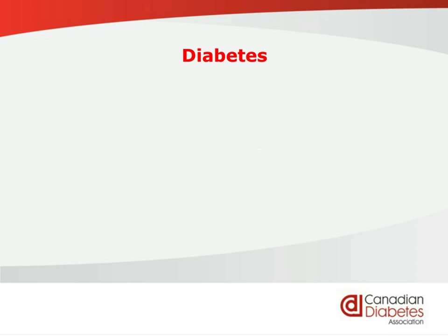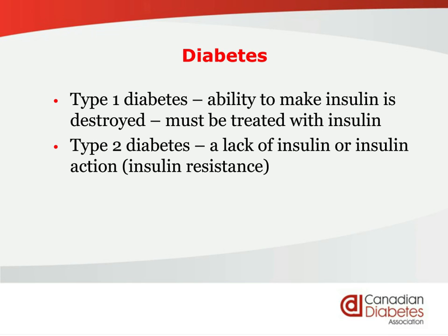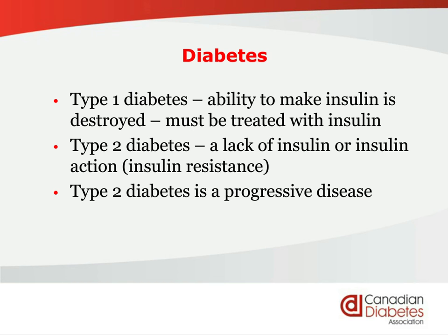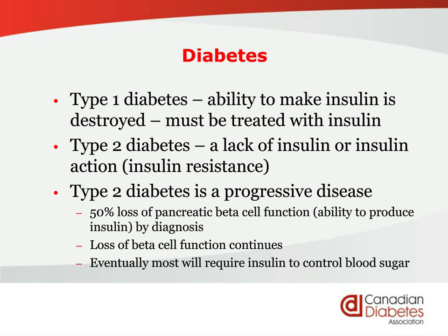In type 1 diabetes, the ability of the body to produce insulin is destroyed. It's an autoimmune disease, and they need to start with insulin right away. In type 2 diabetes, there might be a lack of insulin, or the inability of the insulin to actually work fully, called insulin resistance. If you have type 2 and go on insulin, you are not now type 1 — you've always got type 2, even if you end up only on insulin. Type 2 diabetes is a progressive disease. By the time you are diagnosed, you've already lost 50% of the ability to produce insulin from your pancreas, and that continues. Eventually, most people do require insulin in some form.